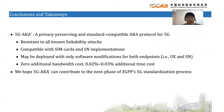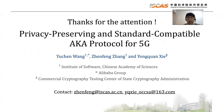In this work, we propose 5G-AKA prime, which is a privacy-preserving and standard-compatible AKA protocol for 5G. It is resistant to all known linkability attacks and is compatible with SIM cards and SN implementations. It may be deployed with only software modifications for both endpoints. Compared with 5G-AKA, it involves zero additional bandwidth cost and only 200% to 300% additional time cost. We hope that 5G-AKA prime can contribute to the next phase of 3GPP's 5G standardization process.